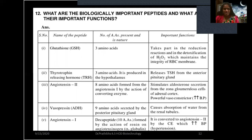Angiotensin II contains eight amino acids, formed from angiotensin I by the action of converting enzyme. Its important functions include stimulating aldosterone secretion from the zona glomerulosa cells of the adrenal cortex, and it is a powerful vasoconstrictor which increases blood pressure. Vasopressin (ADH) contains nine amino acids, secreted by the posterior pituitary gland, and causes absorption of water from the renal tubules.